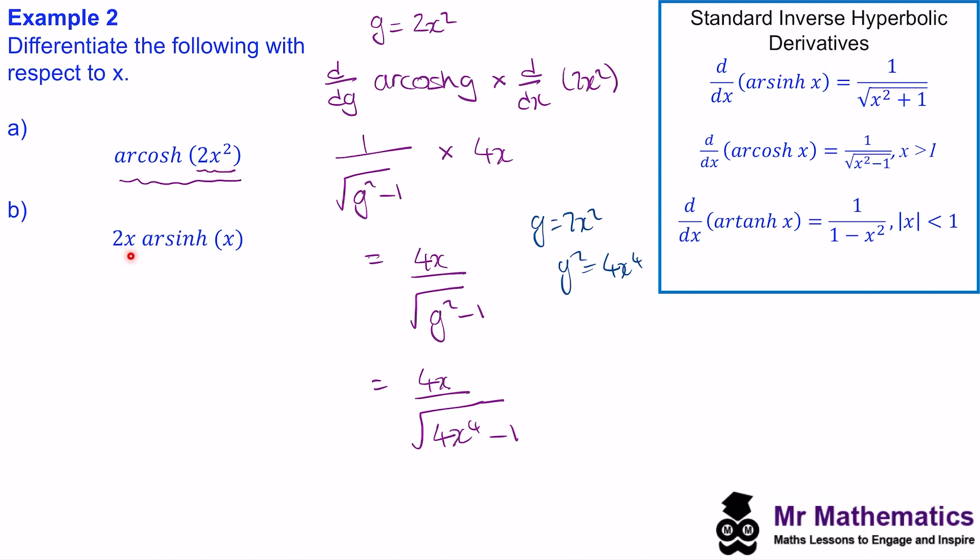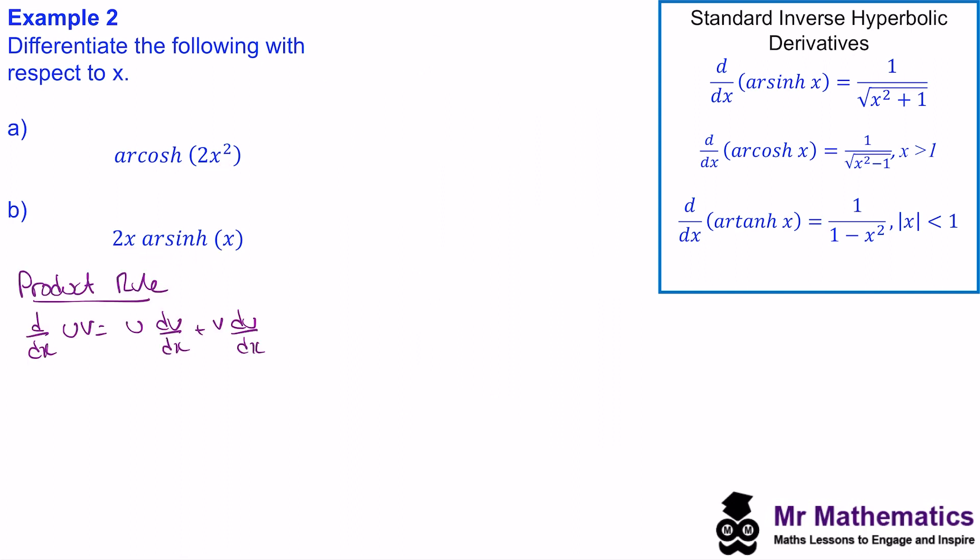And in question b, we're going to use the product rule. So when u and v are both functions of x, we know the derivative will be u dv by dx plus v times du by dx. So applying this to our expression, we can say that u is equal to 2x. du by dx will therefore be equal to 2. v will equal arsinh of x. So dv by dx will be the derivative of this, which is given here. So this is 1 over the square root of x squared plus 1.